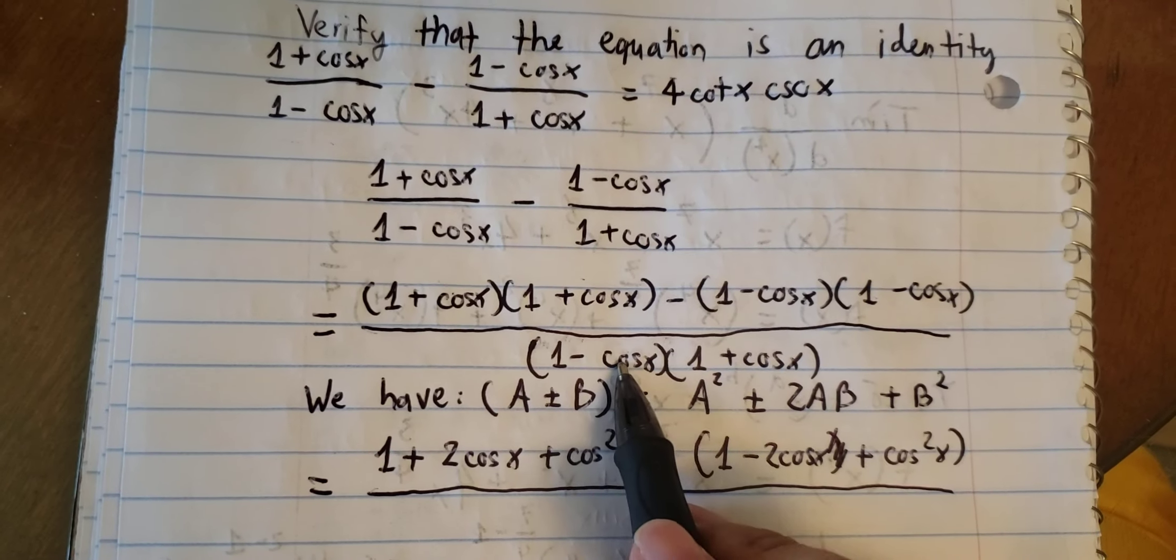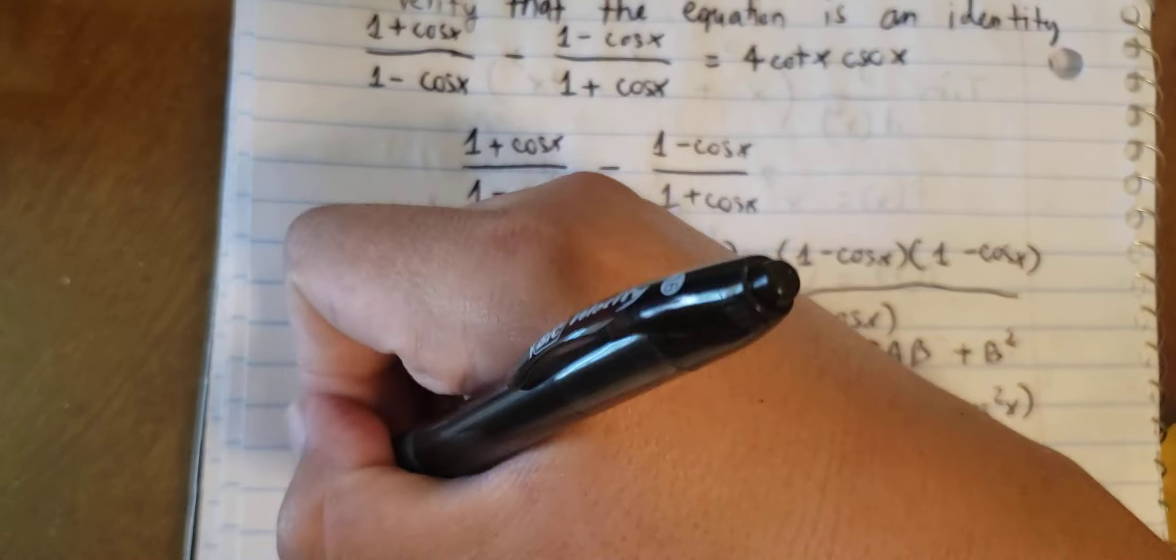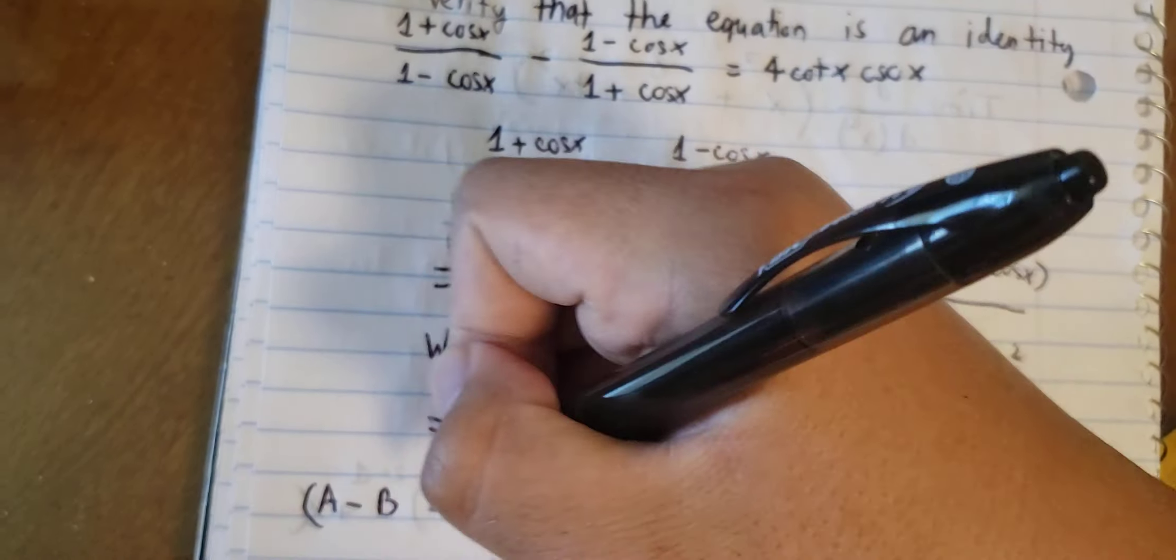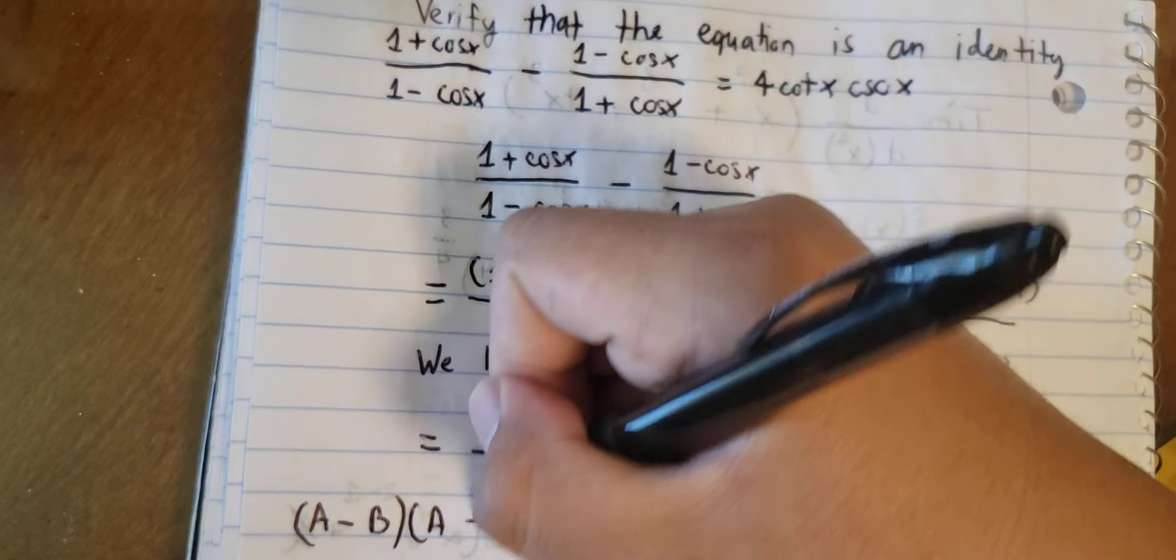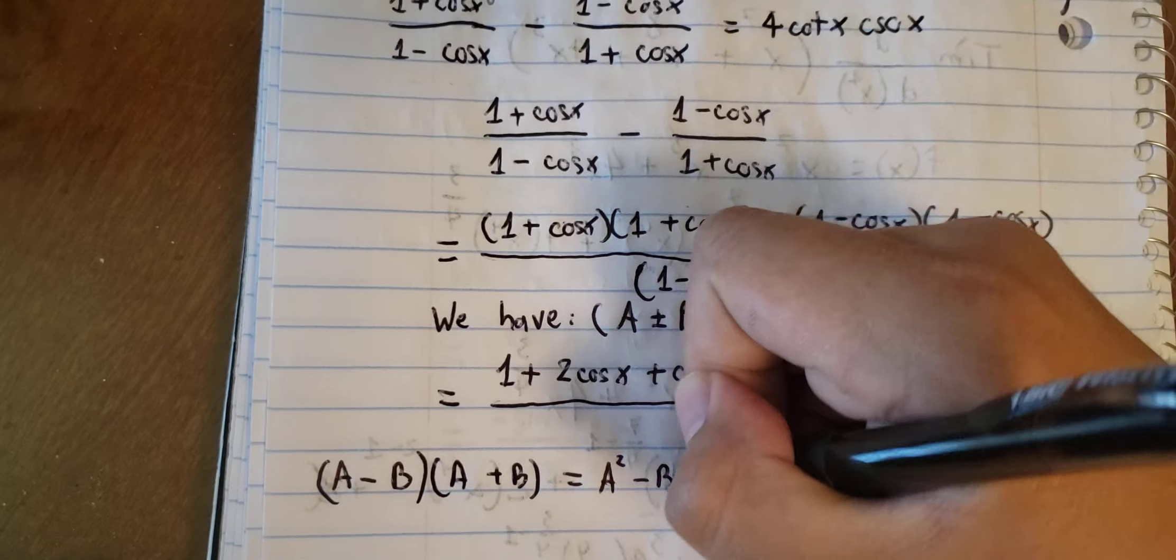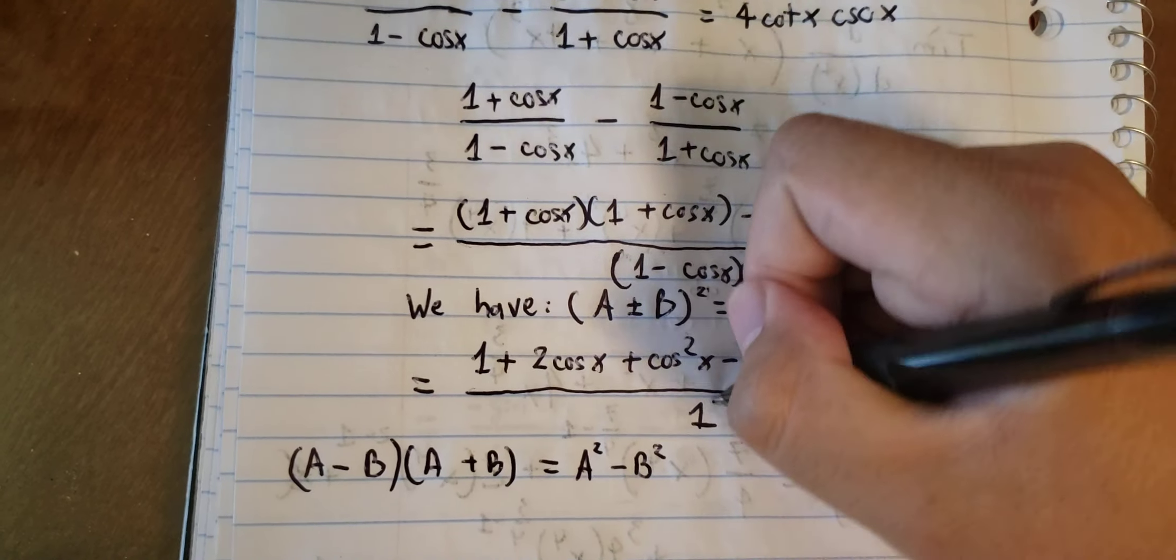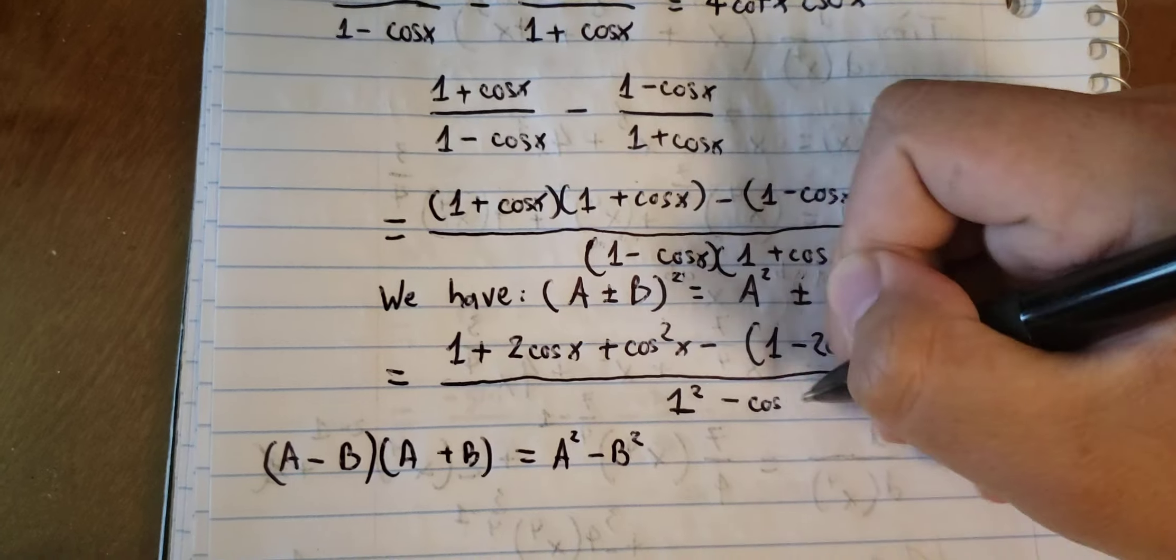This one, that is another identity. So we have 1 squared minus cos x squared.